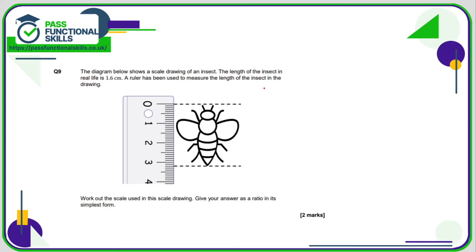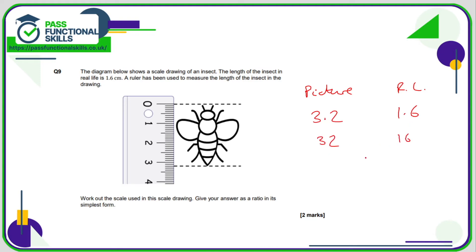Question nine: the length of the insect in real life is 1.6 centimeters, and on the picture it is 3.2 centimeters. Since 3.2 is double 1.6, the ratio of picture to real life is 2 to 1.